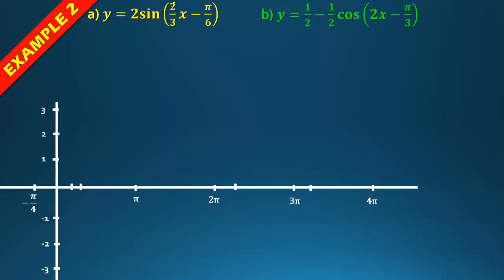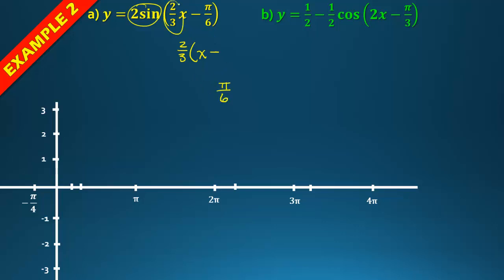When you have something like 2/3 in front of x with a phase term, you need to factor out that 2/3. Getting it away from the x is straightforward, but the constant inside changes. Multiply the constant by the reciprocal of the coefficient — so π/6 times 3/2 — that's what factoring requires.